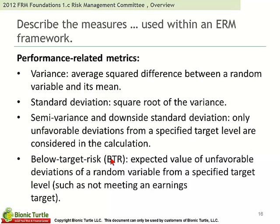Performance-related metrics, many of which are familiar from econometrics, include variance, standard deviation, semi-variance, and downside. We've seen semi-variance and downside in the Sortino ratio, where the downside standard deviation was the denominator in the Sortino ratio — so we can link that to at least one prior concept.